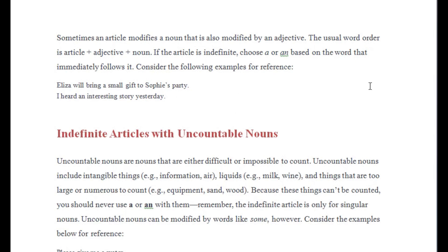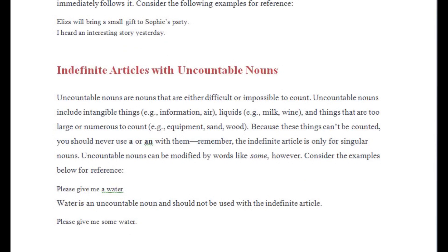Now we're going to talk about indefinite articles with uncountable nouns. As I talked earlier in part one about uncountable nouns, I mentioned examples like 'advice' and 'information.' So let's see what this paragraph talks about: uncountable nouns are nouns that are either difficult or impossible to count.